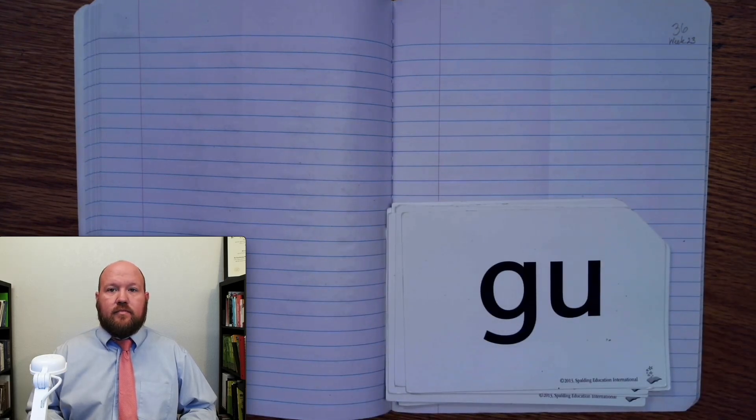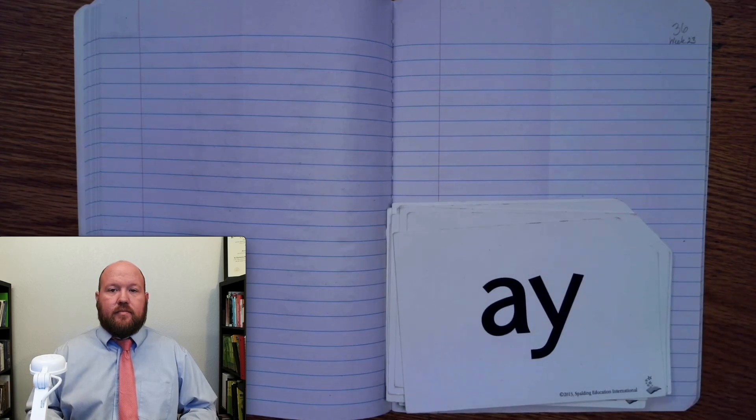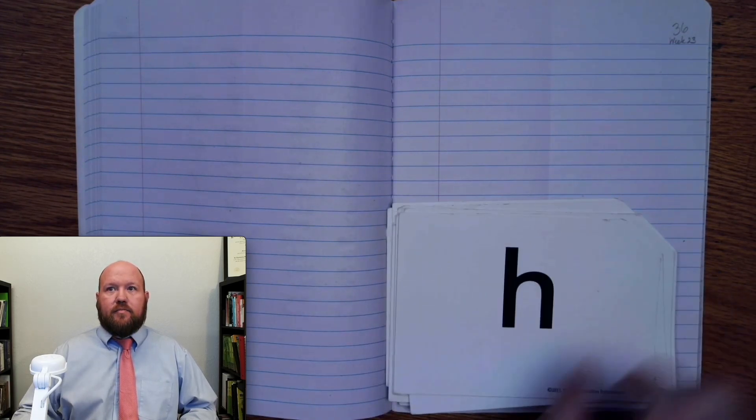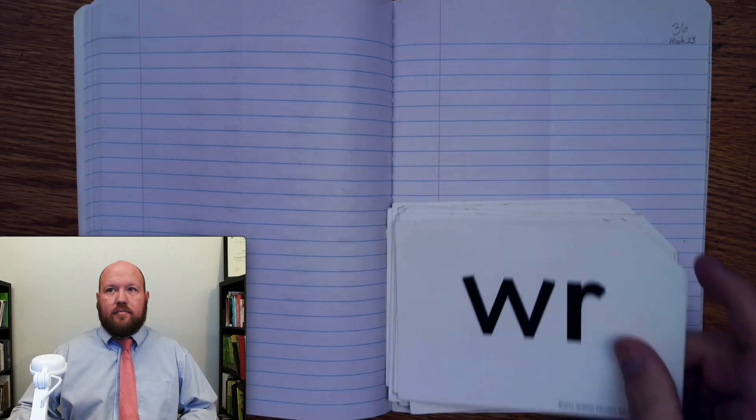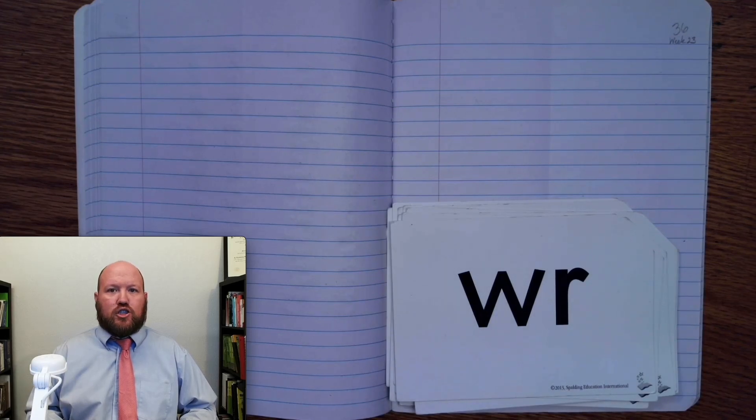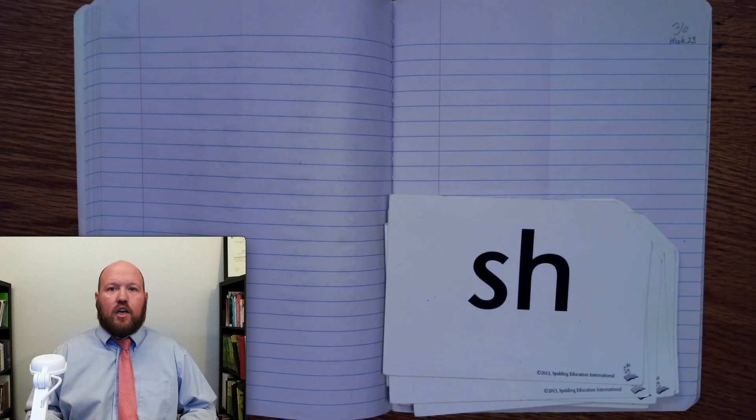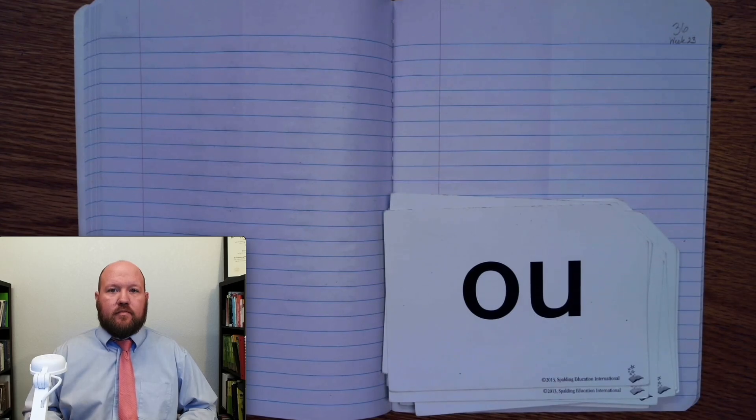G. G. A. H. R. SH. OW. O. O. O. U. U. Now this time through we'll say the sounds followed by the cues. Here we go.